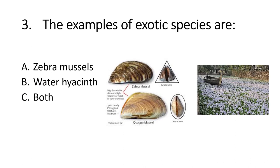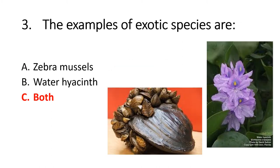Question 3: Three examples of exotic species are given. Alpha option is Zebra mussels. Beta is water hyacinth. Charlie is both. The right option is Charlie — both. So zebra mussels and water hyacinth are both examples of exotic species.